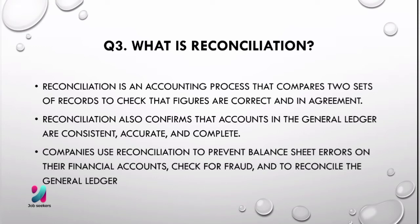The next question is: what is reconciliation? Reconciliation is an accounting process that compares two sets of records to check that figures are correct and in agreement. Reconciliation also confirms that accounts in the general ledger are consistent, accurate, and complete. Companies use reconciliation to prevent balance sheet errors on their financial accounts, check for fraud, and to reconcile the general ledger.